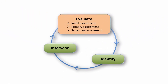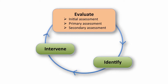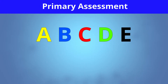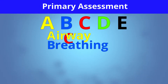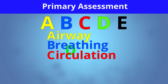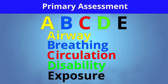Your evaluation is going to include your initial impression, or your pediatric assessment triangle. You'll then move into your primary assessment or survey, which will be your A, B, C, D, and E assessment. A is for airway, B is for breathing, C is for circulation, D is disability, and E is for exposure.